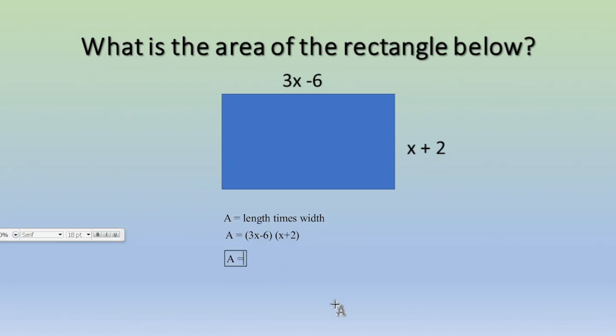So if I do my first terms, I'm going to have 3x times x, which is going to be 3x². Okay, so we'll have 3x². Slide this over so we don't lose our exponent. That's the first terms. Then I would go to the outer terms, which would be 3x times 2, which would be 6x. Then the inside terms, which would be -6 times x. And again, always keep the positive negatives together. So you don't want to lose it off the number. So -6 times x is going to be -6x. And then the last terms are going to be -6 times a positive 2, which is going to be -12.